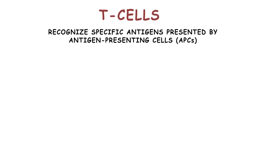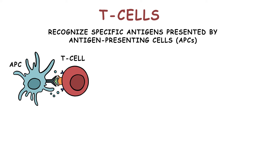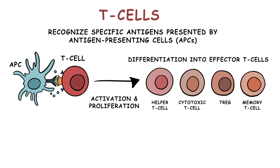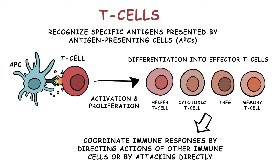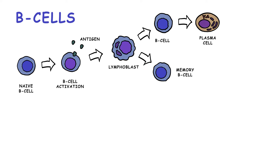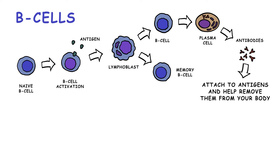T lymphocytes, known as T cells, recognize specific antigens presented by antigen-presenting cells. This triggers the activation and proliferation of T cells, leading to their differentiation into effector T cells. These effector T cells coordinate immune responses by directing the actions of other immune cells, or by attacking directly. B lymphocytes, or B cells, differentiate into plasma cells, which produce and release antibodies. Antibodies attach to antigens and help remove them from your body.